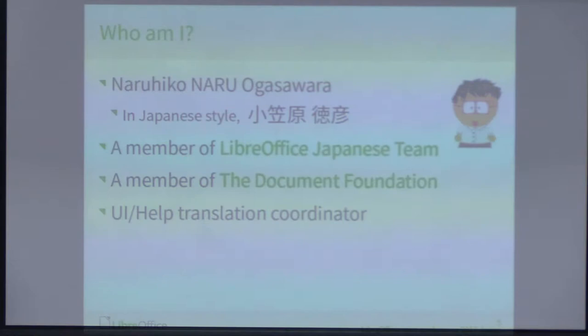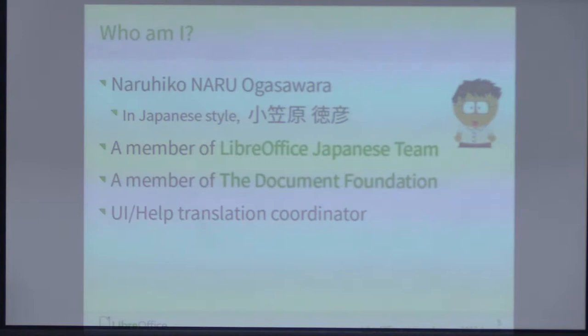Let me introduce myself. I'm Naruhiko — Naru — Ogasawara. Someone can read the kanji character. In Japanese style: Ogasawara Naruhiko. In Japanese, we write the family name first. Ogasawara is my family name and Naruhiko is my given name. I am a member of the LibreOffice Japanese team, the LibreOffice Native Language project in Japan, and also a Document Foundation member. Mainly I do UI translation coordination.